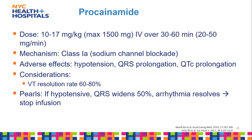Procainamide is also an option for V-tach, dosed the same as for AFib. As a Class 1a antiarrhythmic, it causes sodium channel blockade. Main adverse effects are hypotension and QRS prolongation, and it achieves V-tach resolution about 60 to 80 percent of the time.